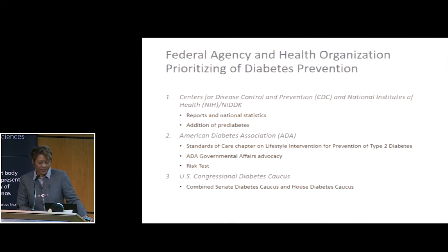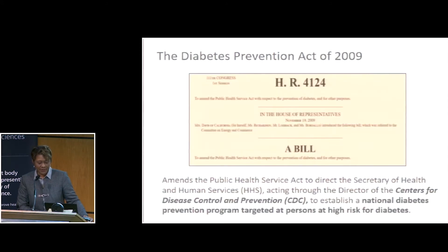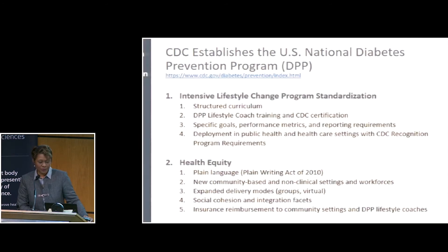The agencies primarily involved in putting this on the national agenda include the American Diabetes Association, which develops and publishes the standards for medical care in diabetes — it added a chapter on lifestyle intervention to those standards — and ADA has a government affairs division that works directly with Congress. In 2009, the 111th Congress passed the Diabetes Prevention Act, the first of its kind, establishing the National Diabetes Prevention Program lifestyle change program with the CDC in an oversight role.